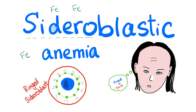Medicosis Perfectionalis listeners, let's talk about sideroblastic anemia. In the last video, I explained heme synthesis — please go ahead and watch that video first; this video will make a lot more sense then. Sideroblastic anemia: anemia symptoms include tired and pale, pale and tired. Sometimes there is a murmur, sometimes angina, exercise intolerance, extreme fatigue, etc.